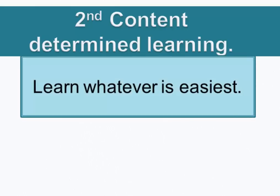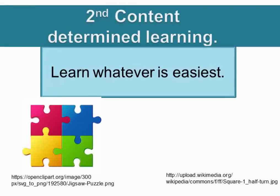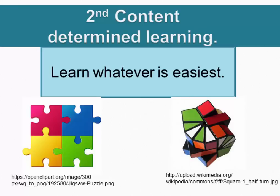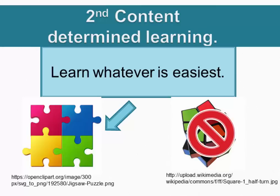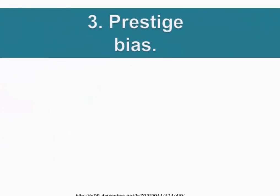The second bias is called 'content-determined learning' — simply learn whatever is easiest. Given the choice between a four-piece puzzle and a complex Rubik's Cube, most of us will go for the four-piece puzzle. Look at all the advertisements that promise you can learn something easily without much effort. This is one of the biggest obstacles higher education faces today: the expectation that learning should be easy and effortless.